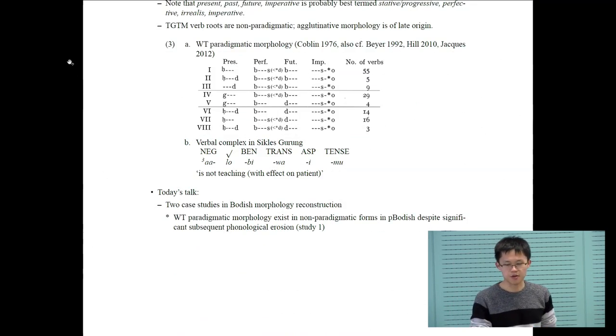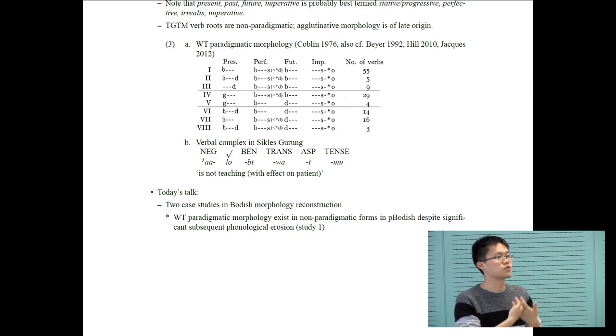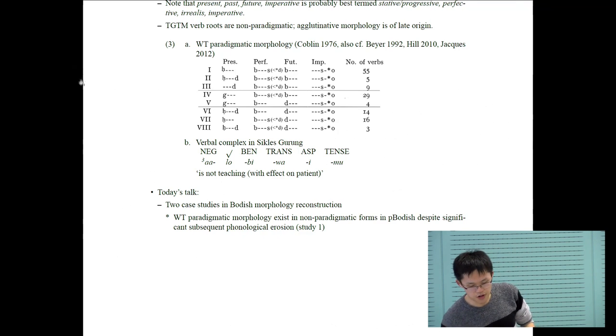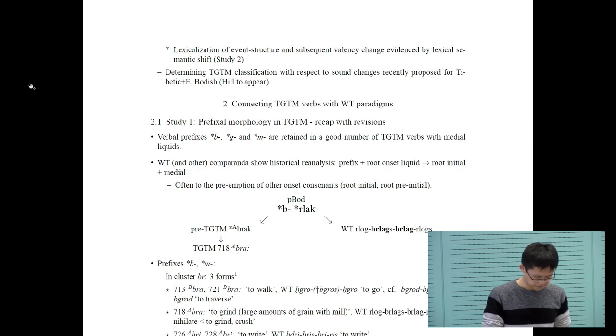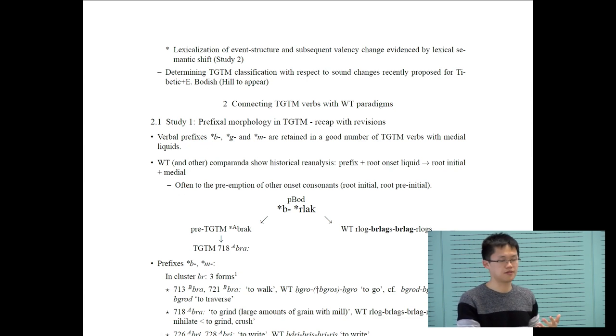I'm going to talk about two case studies in Bodish verbal morphological reconstruction. In one of them, I'm going to try to show that these paradigmatic morphemes existed in non-paradigmatic forms in Proto-Bodish, despite significant phonological erosion in Tamangic. The second study looks at a case of lexicalization of event structure that leads to subsequent valency change.